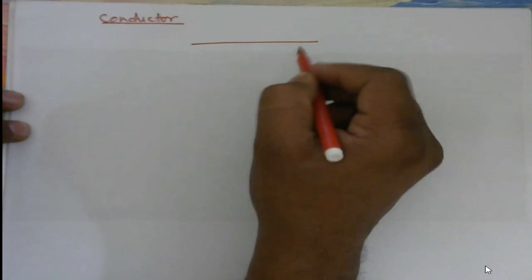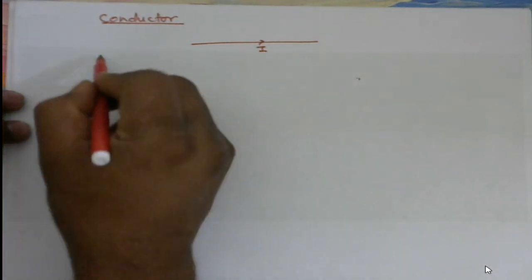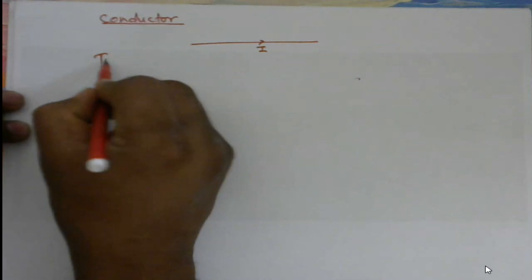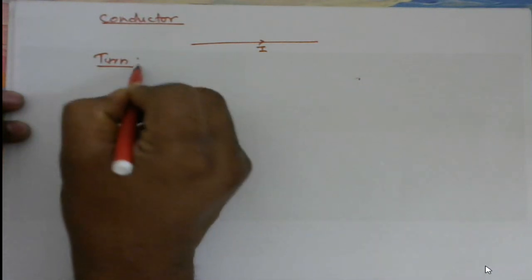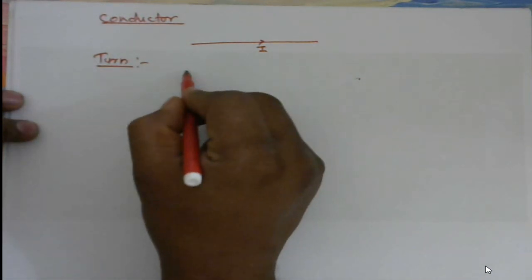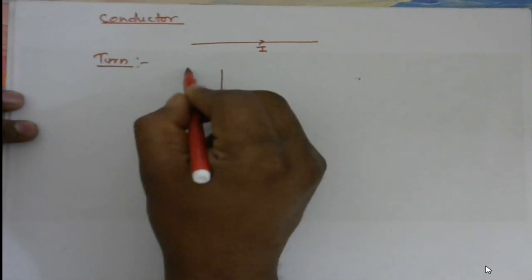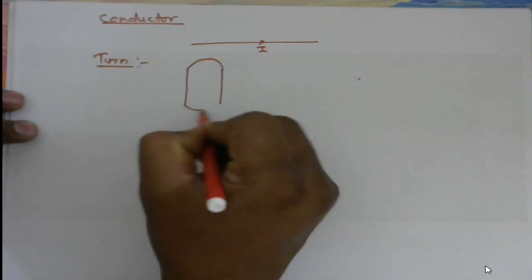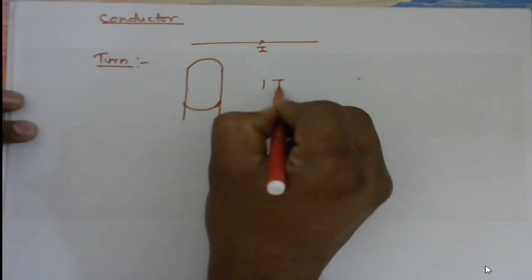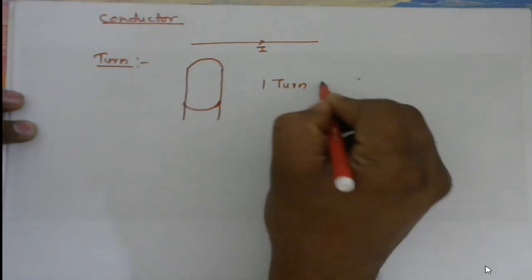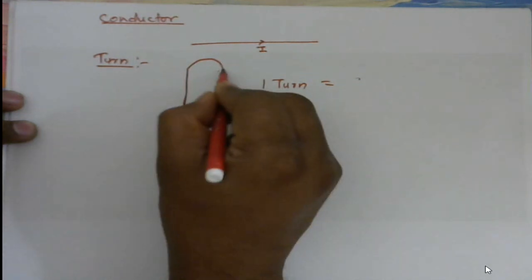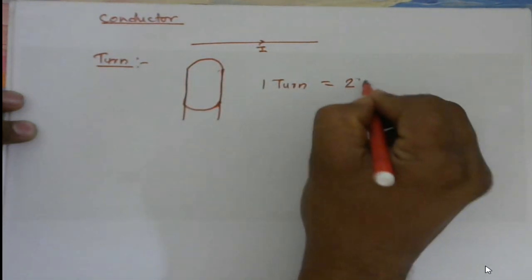Then next is a turn. So what is done? If we are going to connect two conductors to each other, it will form a turn. So this is one turn, and you know that this is conductor one and conductor two, so one turn is equal to two conductors.